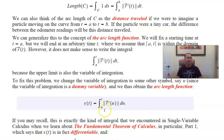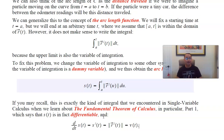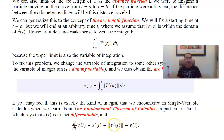This form should look familiar from part one of the fundamental theorem of calculus. When you take the derivative of this function — and it is differentiable — the derivative is just the integrand evaluated at the upper endpoint t. So the derivative of the arc length function s of t is just the magnitude of r prime of t, which is the speed function.